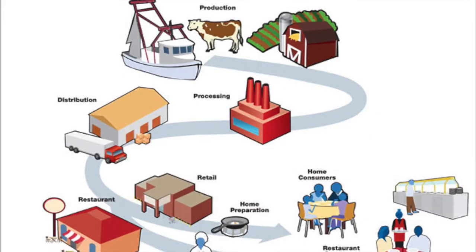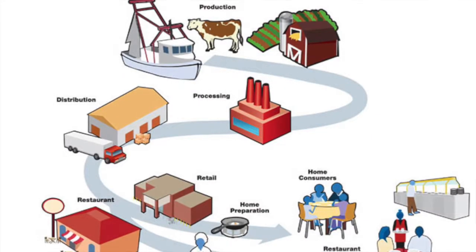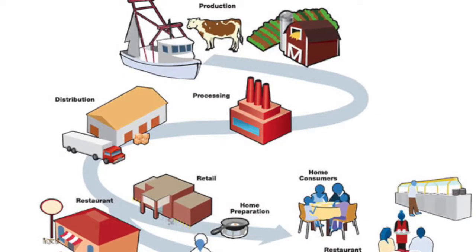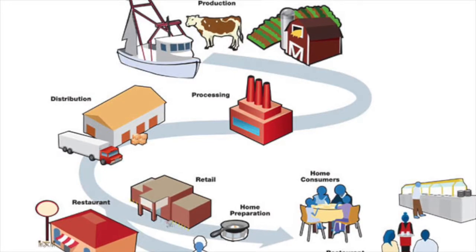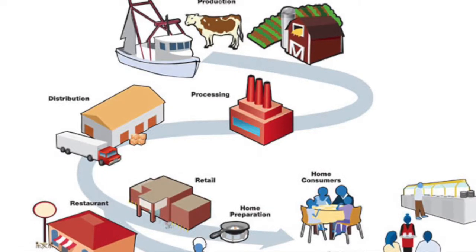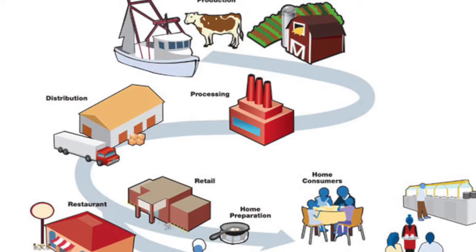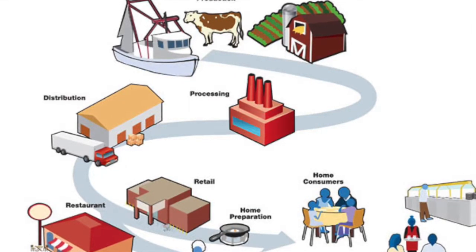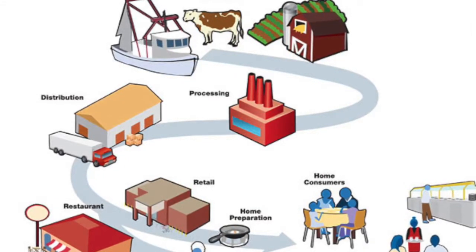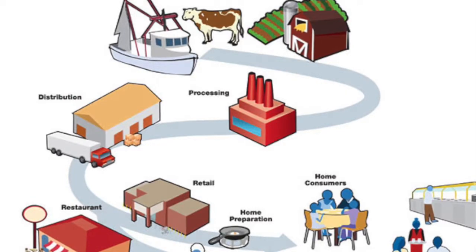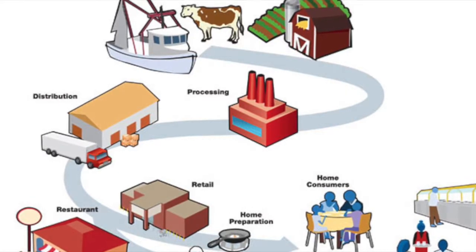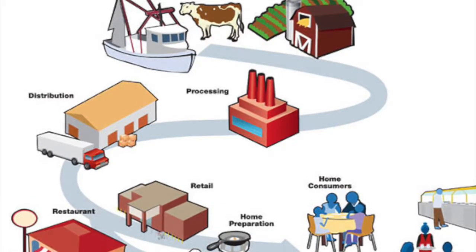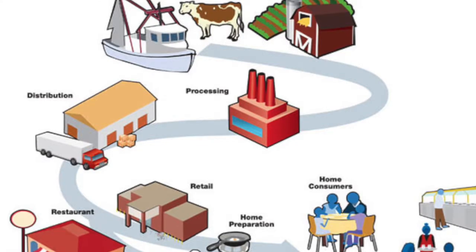Let's take a look at how food gets contaminated. It takes several steps to get food from farm to fork. We call these steps the food production chain. Contamination can occur at any point along this chain during production, processing, distribution, and preparation.